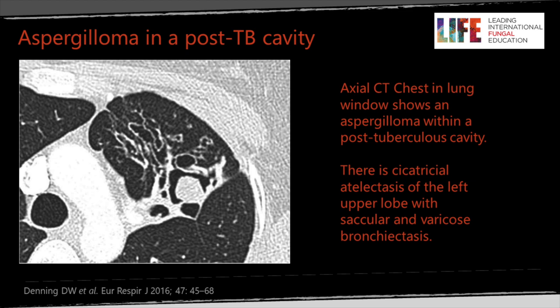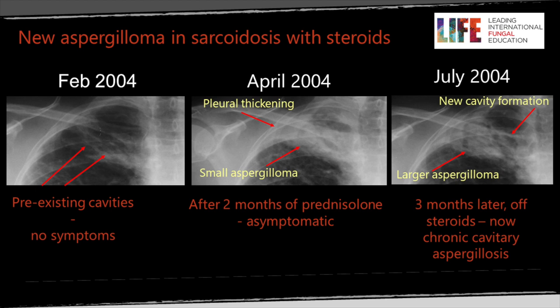Here's another aspergilloma example where the fungal ball is quite smoothly demarcated, and the meniscus wouldn't be as easy to pick up because there's quite a lot of adjacent cicatricial deformation with bronchiectasis — CT is the best way of showing this. On plain radiography, in February 2004 there was just patchy shadowing with a slight cavitary formation at the right apex. By April of the same year there's increased pleural thickening just adjacent to the clavicle, and you can see the early part of the crescent. Within three months that crescent is very obvious, with the fungal ball sitting within the cavity. There's also evidence of new cavity formation medially — progressive cavitary aspergillosis.